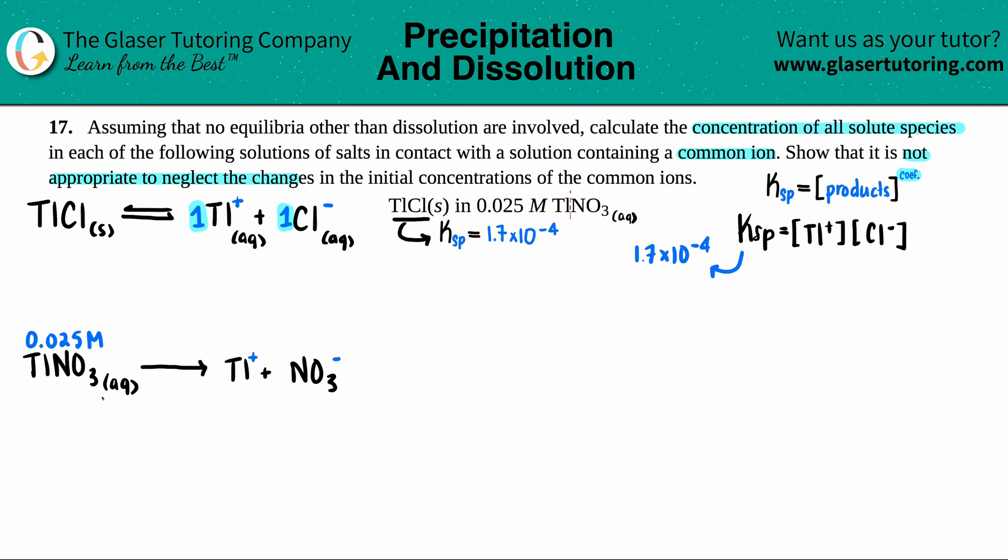They told us we had 0.025 molarity of the TlNO₃. The thing here is that you want to only worry about the ion that is the same in both equations. Which ion is the same? It's the Tl—that's called the common ion effect. Since I have one-to-one, whatever the molarity is here, that's what the molarity is going to be for the Tl. Now I have a starting molarity for my solubility. This is initial.